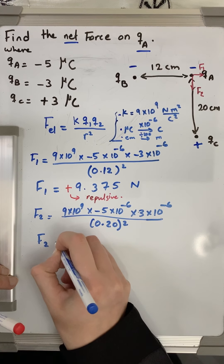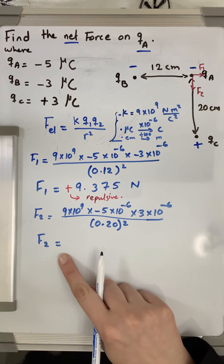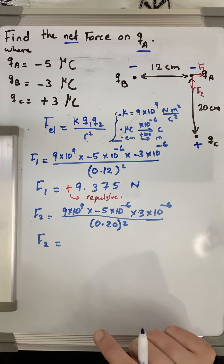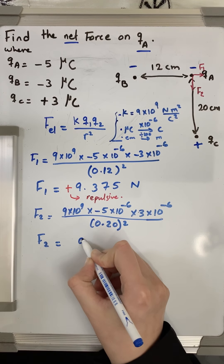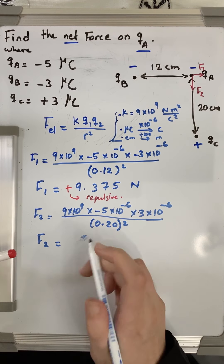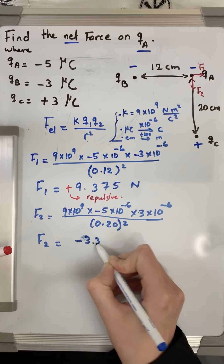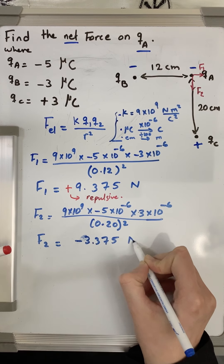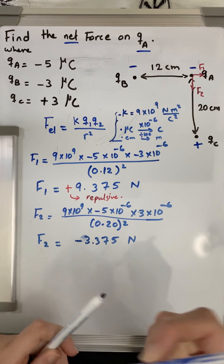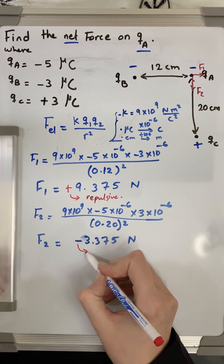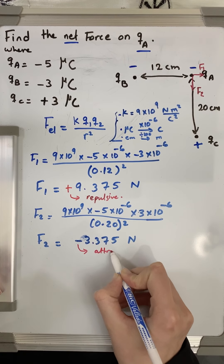Again, using this equation, we will find that F2 will be negative 3.375 newtons. Being negative means that this force is an attractive force because the force will be negative when the two charges are different or unlike.